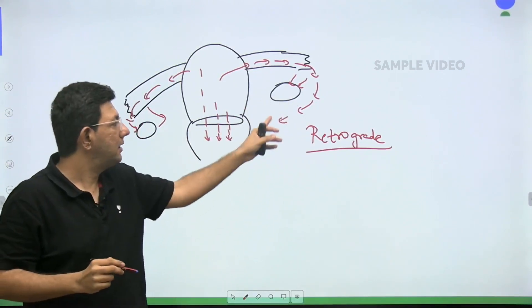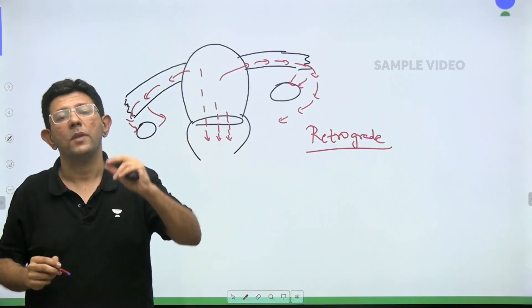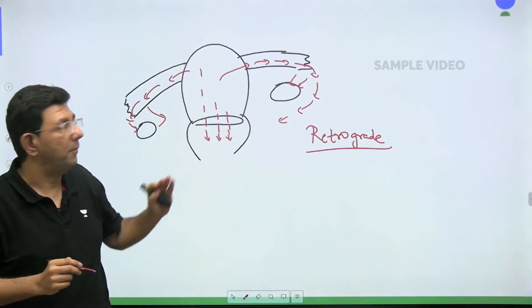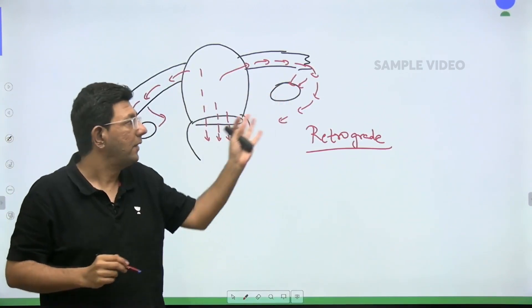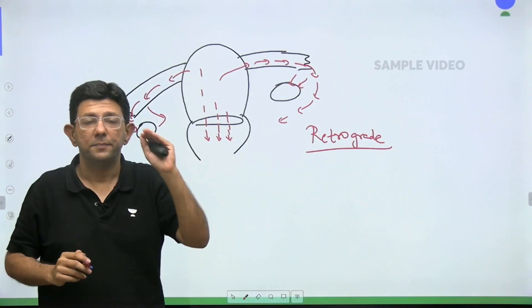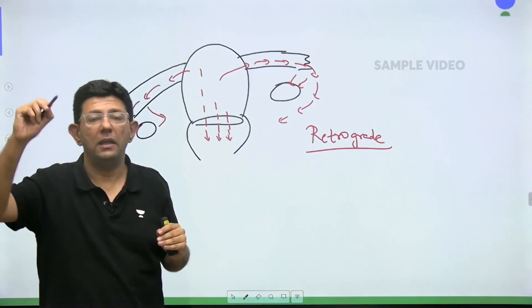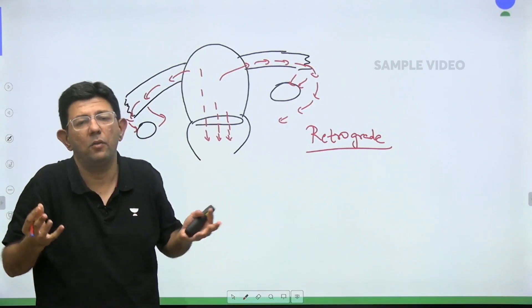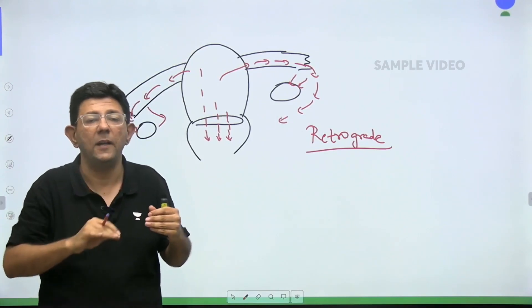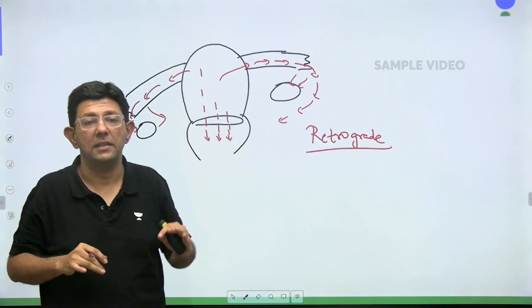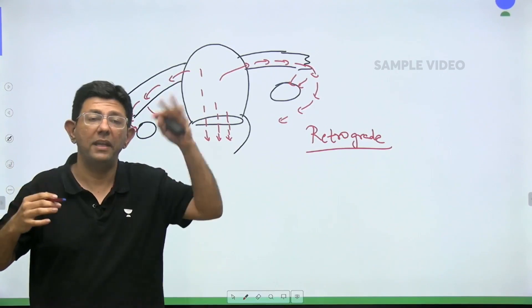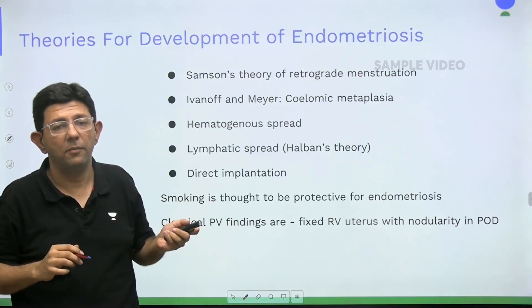Other theories include coelomic metaplasia — where the coelomic epithelium converts itself into endometrium — hematogenous spread, lymphatic spread of endometrium getting implanted at various places, and direct deposition during LSCS surgery, where endometrium from inside may get implanted on the surgical scar. That is why you can get caesarean section scar endometriosis and episiotomy scar endometriosis. Endometriosis has also been found in the bladder, pleura, and lungs.